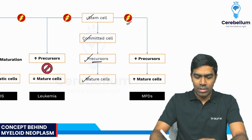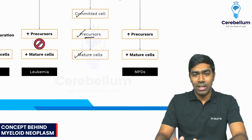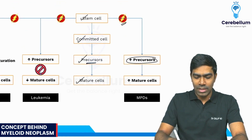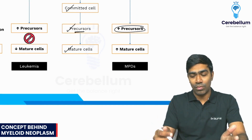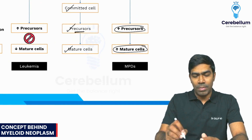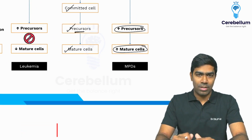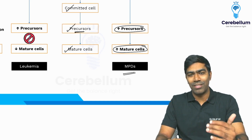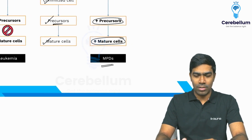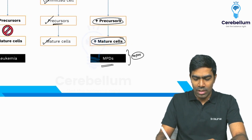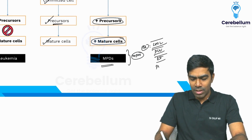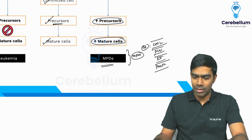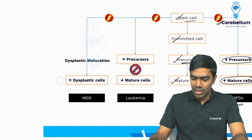In case there is a mutation or cytogenetic abnormality, that is going to result in increased production of the precursor — remember, this is basically a stem cell problem. If that mutation or cytogenetic abnormality is associated with increased production of precursors as well as mature cells, without any significant block in differentiation, those disorders are called myeloproliferative neoplasms or myeloproliferative disorders. The best examples are chronic myeloid leukemia (CML), polycythemia vera, essential thrombocytosis, and primary myelofibrosis.